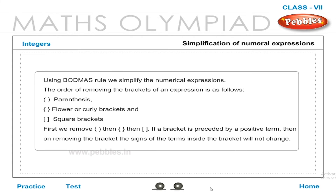Simplification of numerical expressions: Using the BODMAS rule, we simplify numerical expressions. The order of removing brackets is: parentheses first, then flower or curly brackets, then square brackets. If a bracket is preceded by a positive term, then on removing the bracket, the signs of the terms inside the bracket will not change.